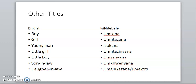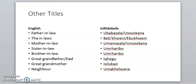Son-in-law is umkwenyana. Daughter-in-law is umalukazana or umakoti — most people prefer umakoti but that's more Zulu, so in isiNdebele we say umalukazana. Father-in-law is umabazala or usosogana. The in-laws collectively are bebkweny or ebukweny. Mother-in-law is umamazala or unosogana. Sister-in-law and brother-in-law are both umharibo. Great-grandfather is ikeku — mind your tongue on that. Great-grandmother is isilukazi.